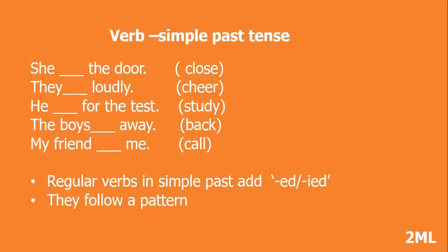Here are some examples: She closed the door. They cheered loudly. He studied for the test. The boys backed away. My friend called me. Now all these verbs are called regular verbs in the simple past when they take an -ed or -ied ending.